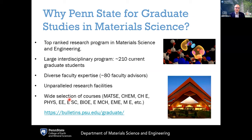Beyond our top-ranked program, it's a very large and interdisciplinary program — we have either the largest or second largest graduate program in material science in the country, with about 210 current graduate students, most of whom are PhD students. We have a very diverse set of faculty advisors — about 80 faculty advisors are available to you, roughly 30 within our department of material science and engineering and about 50 outside the department.